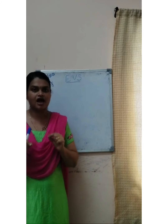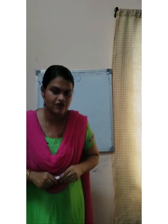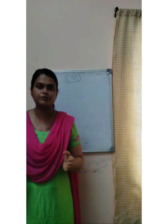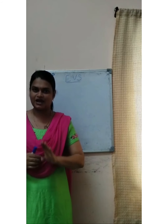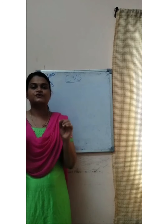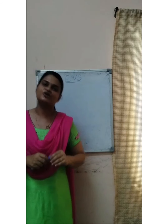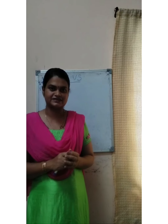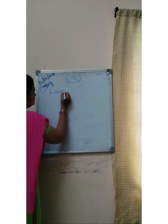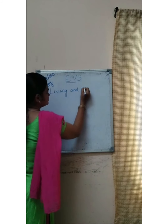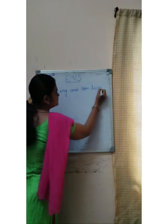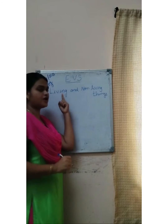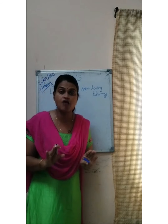So the things that have life are called living things. And what about table, chair, book, pen, pencil? Are they living? No, they are not living. They have no life. So the things that do not have life are called non-living things. Today we are going to study about living things and non-living things. The things that have life are called living things and the things that do not have life are called non-living things.